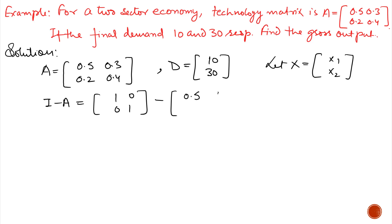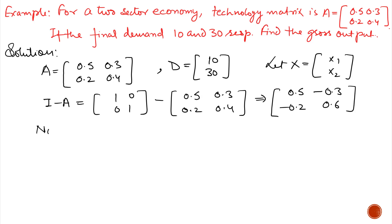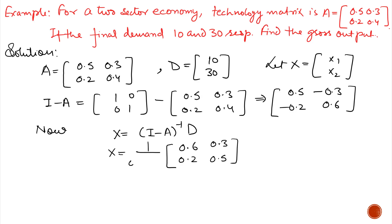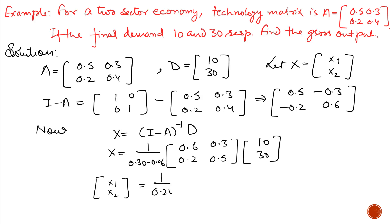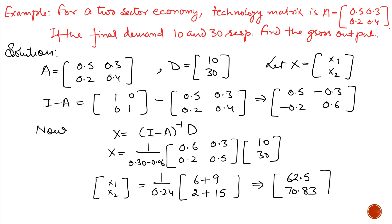I is the identity matrix and A is given. After subtracting A from I we get [0.5, -0.3; -0.2, 0.6]. Now X equals (I minus A) inverse multiplied by D. For the inverse of I minus A, we interchange the upper diagonal elements, change the signs of the off-diagonal elements, and multiply by 1 divided by the determinant. We get 1/0.24 times the matrix, giving final answers of X1 equals 62.5 and X2 equals 70.83. The gross output of the two sectors is 62.5 and 70.83.